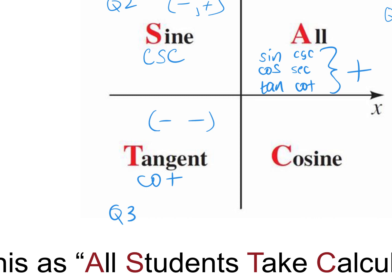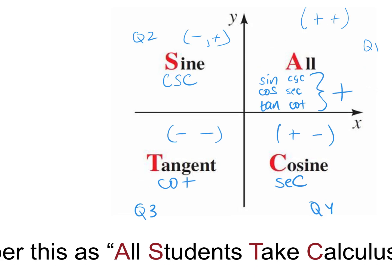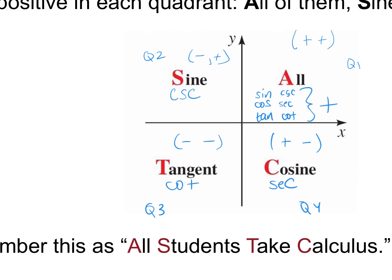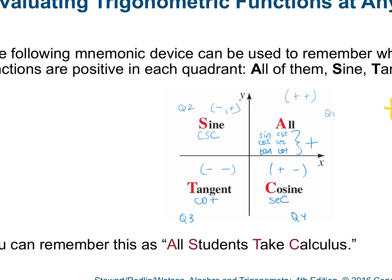Cosine goes with its reciprocal secant. In quadrant four, cosine and secant are positive. The X value is positive and the Y value is negative. You're going to use that a lot to assign values and understand where the angle lies and whether X and Y are negative or positive.